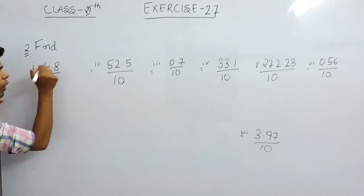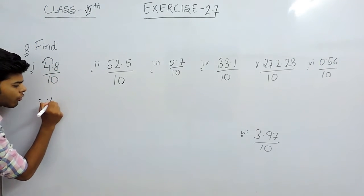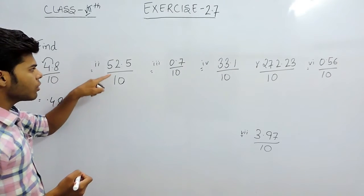So the decimal will be shifted 1 point towards left and the answer will be 0.48. And this one also there is one 0.